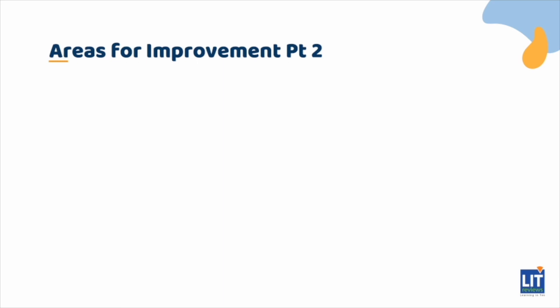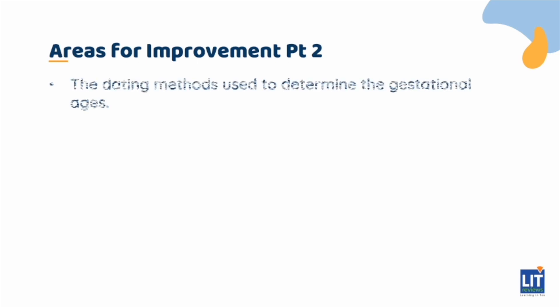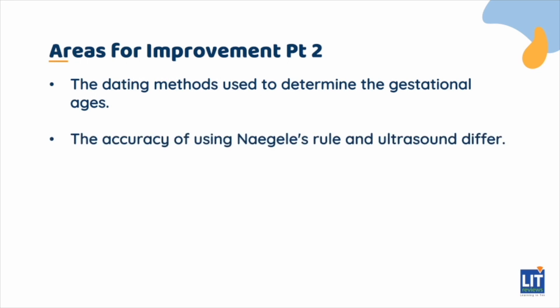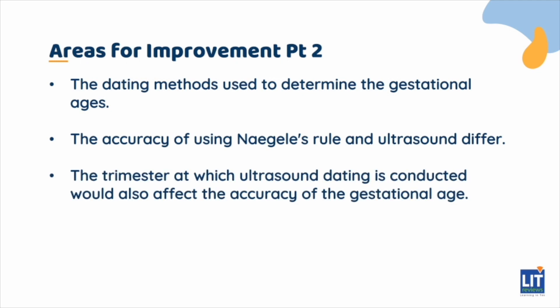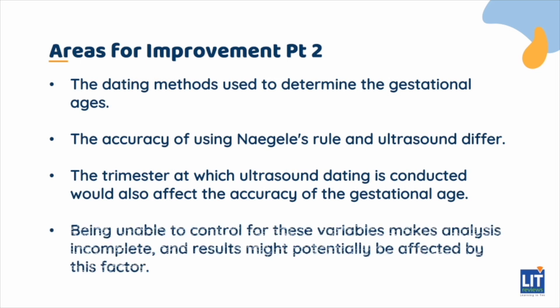Another factor that affects the accuracy of the gestational age itself is the dating methods used to determine the gestational ages. The accuracy of using Naegele's rule and ultrasound differ. The trimester at which ultrasound dating is conducted would also affect the accuracy of the gestational age. Being unable to control for these variables makes the analysis incomplete and results might potentially be affected by this factor.